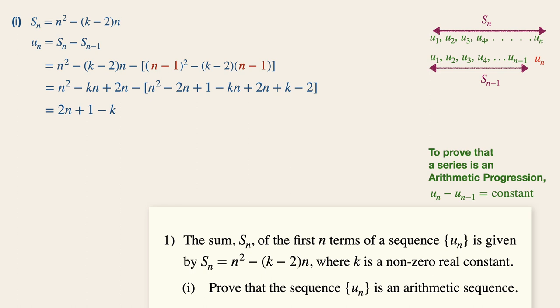Which is the expression for the nth term. Now remember to prove that the sequence is an arithmetic progression, un minus un-1 must be a constant term. So un is taken from the previous working, while un-1 is simply replacing the n with n minus 1 again.